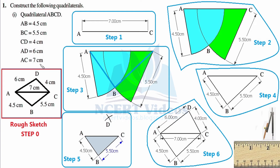So from this question, we are given four sides and one diagonal. We have learned in this exercise that if we are given four sides and one diagonal, we can successfully construct a unique quadrilateral. With this understanding, we first form a rough sketch, because it helps us in constructing the actual figure with real measurements using our ruler and pair of compasses.